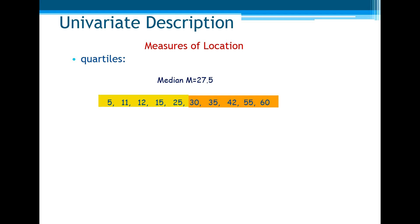Now, let's see measures of location: the quartiles. As you see, the median divided the set of data, a given set of data, in two equal parts. In this case, the median is 27.5.